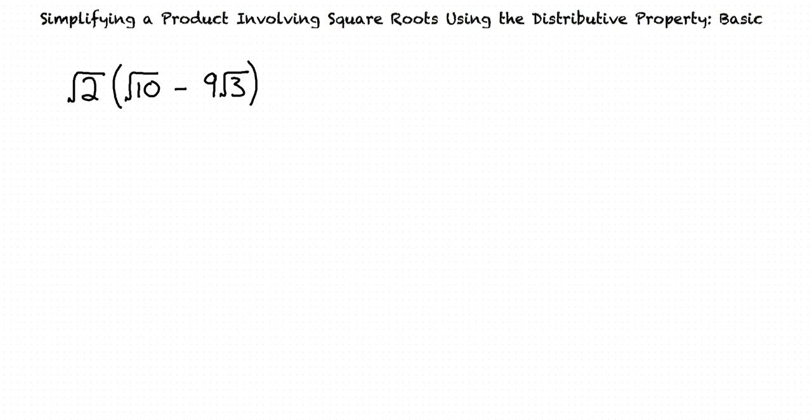The mathematical order of operations tells us that we first need to simplify what is in parentheses. However, in this case, there is no easy way to simplify inside the parentheses. So first, we need to use the distributive property to multiply the terms inside the parentheses by the term outside the parentheses.